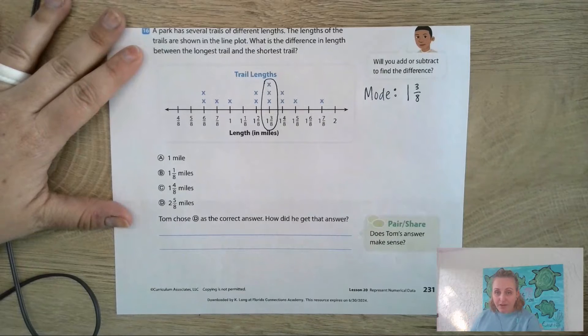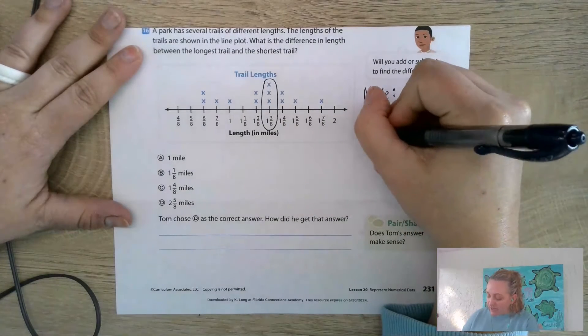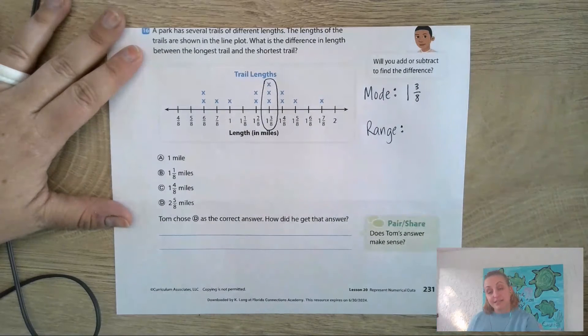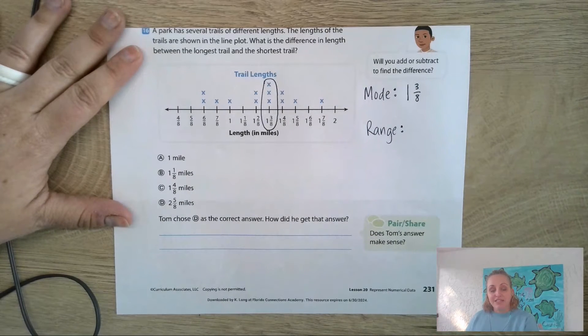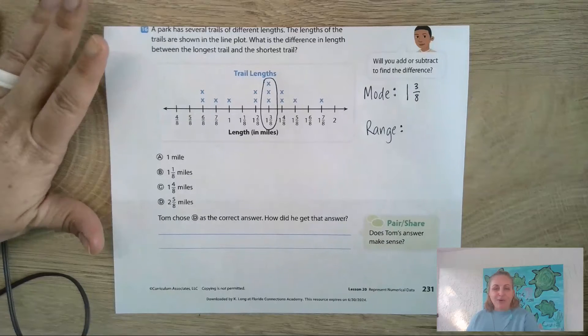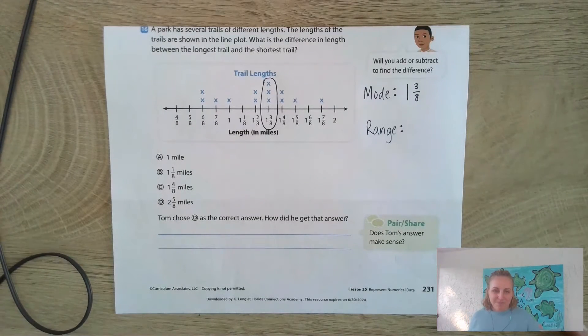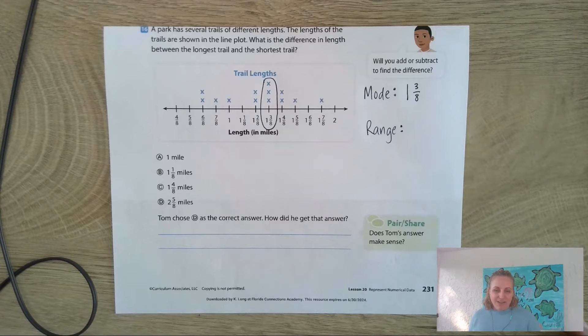In this case, 1 and 3/8 has the most X's on top of it, so 1 and 3/8 is the mode.